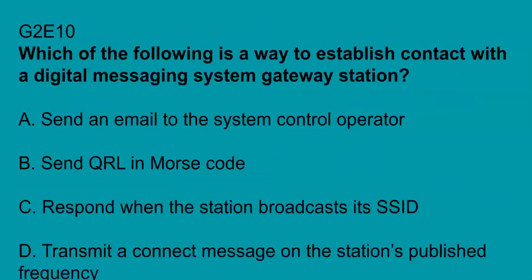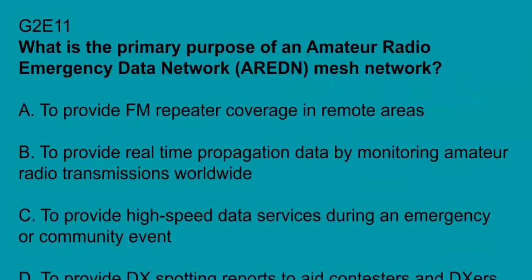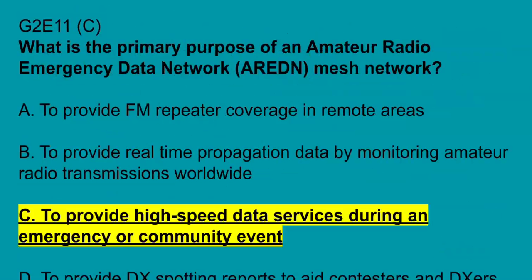G2E10: which of the following is a way to establish contact with the digital messaging system gateway station? Transmit a connect message on the station's published frequency. G2E11: what is the primary purpose of the amateur radio emergency data network mesh network? To provide high-speed data services during an emergency or community event.